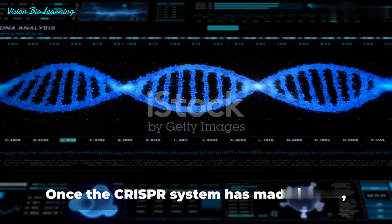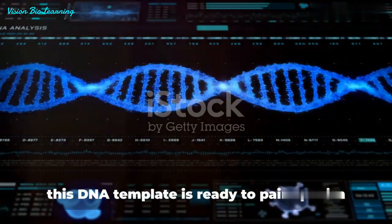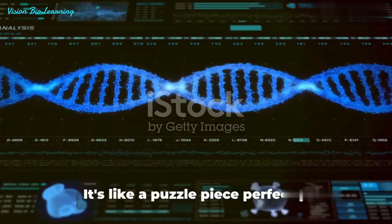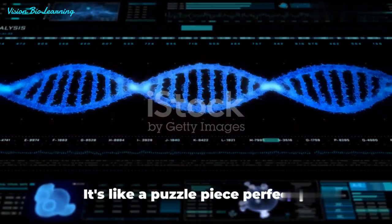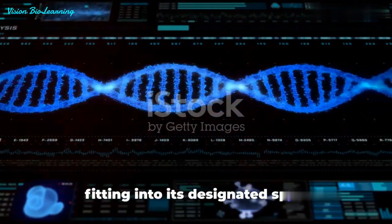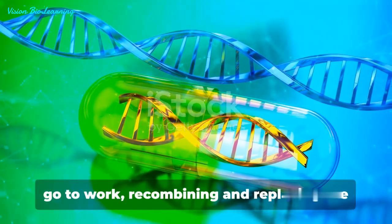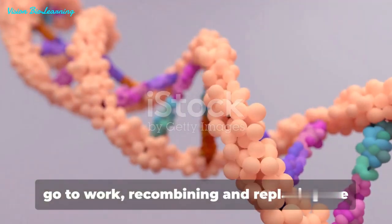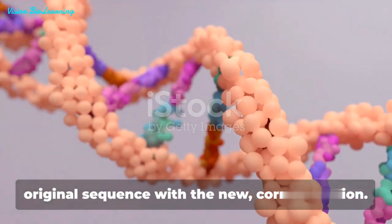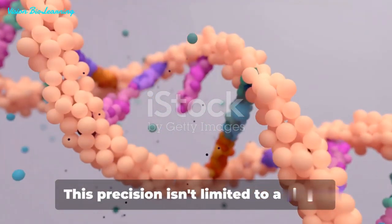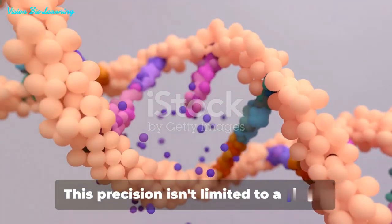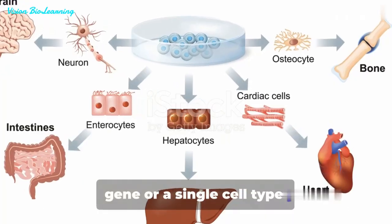Once the CRISPR system has made its cut, this DNA template is ready to pair up with the cut ends. It's like a puzzle piece perfectly fitting into its designated spot. The cell's natural repair mechanisms then go to work, recombining and replacing the original sequence with the new, correct version. This precision isn't limited to a single gene or a single cell type.